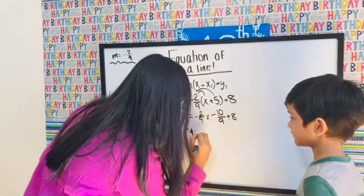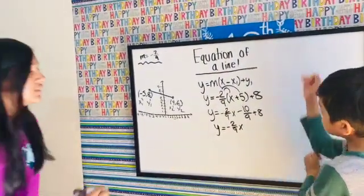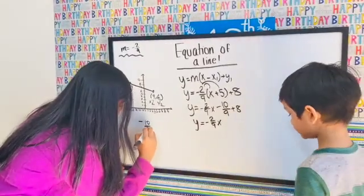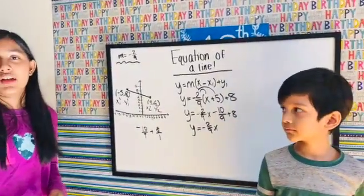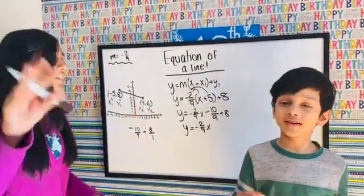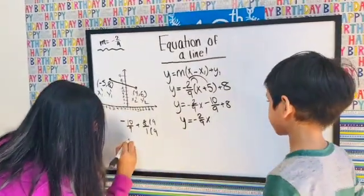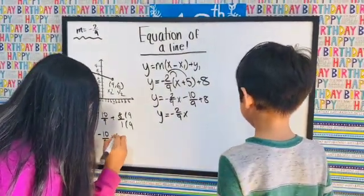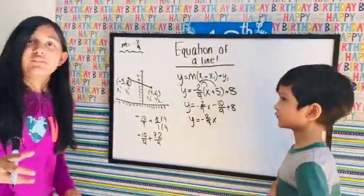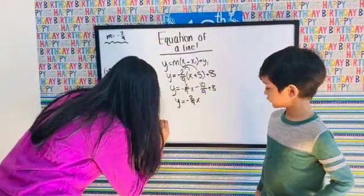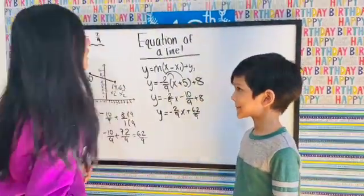So y equals negative two over nine x. Now the tricky part: you have to add negative ten over nine plus eight over one. Multiply eight over one by nine to get 72 over nine. Then negative ten plus 72 is 62, so that's 62 over nine.